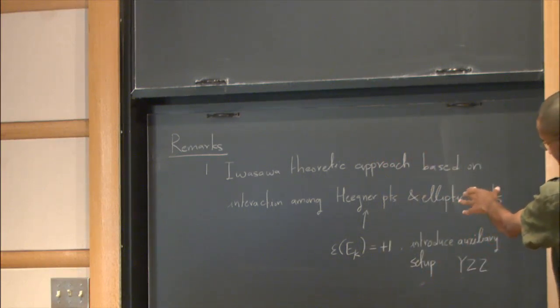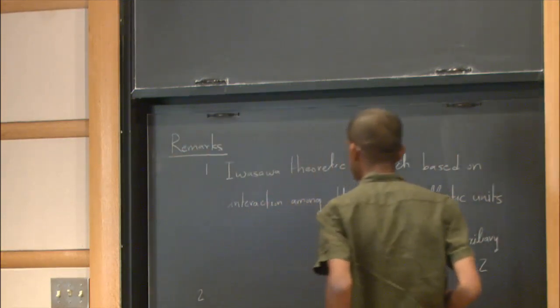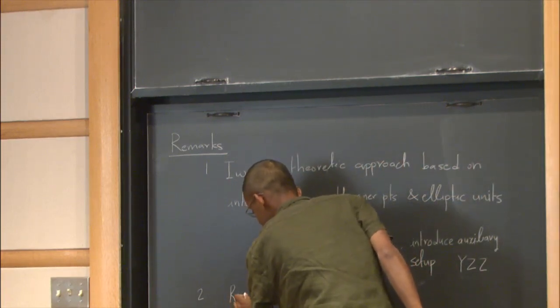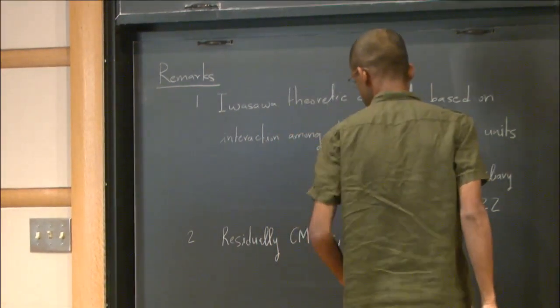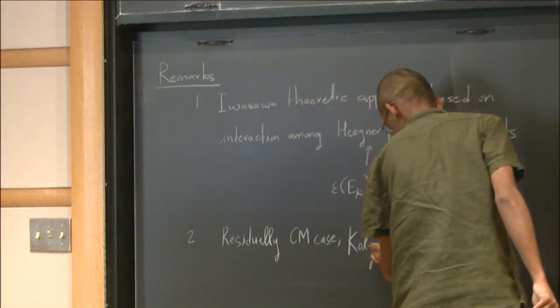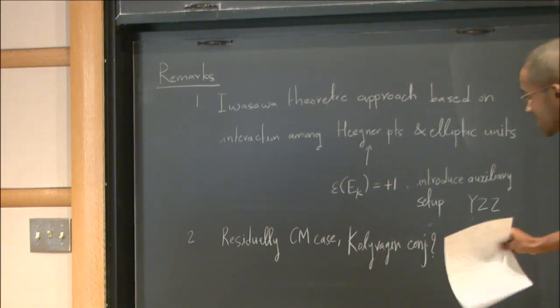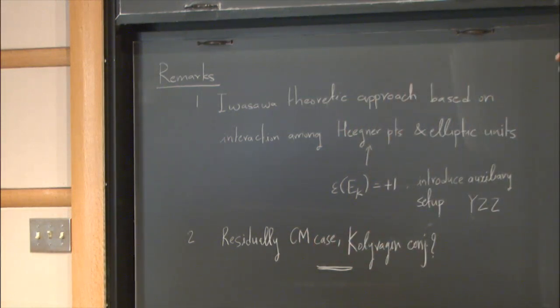So the proof uses sort of maybe essentially, it uses most of the results in the Iwasawa theoretic results for the CM case, including non-vanishing of some anti-cyclotomic regulator. So there are several questions one can ask after this. So for example, one can ask the residually dihedral case, so residually CM. And so, but yeah, I mean, I don't know what to do. And Yetian will probably talk about this sort of, give a detailed talk in the Princeton number theory seminar. I'll stop here.